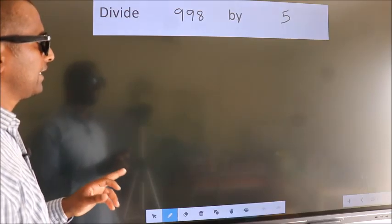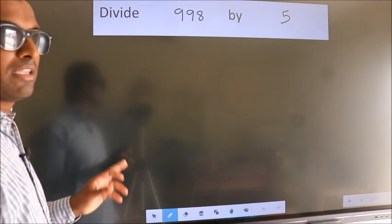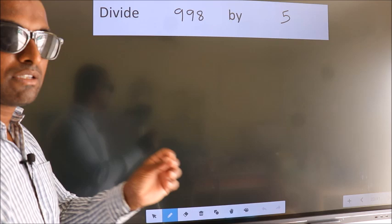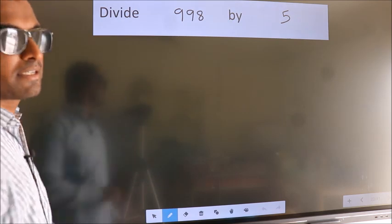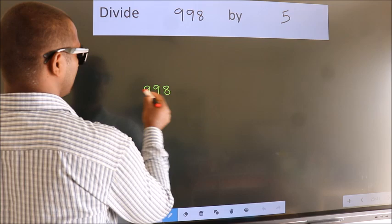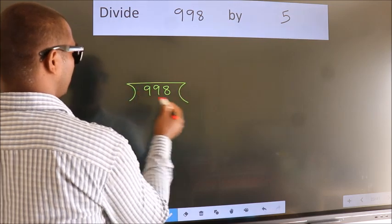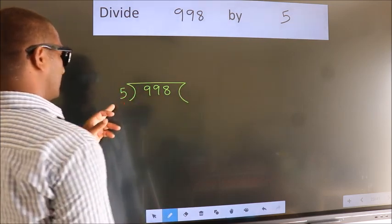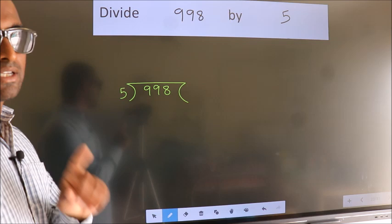Divide 998 by 5. To do this division, we should frame it in this way. 998 here, 5 here. This is your step 1.